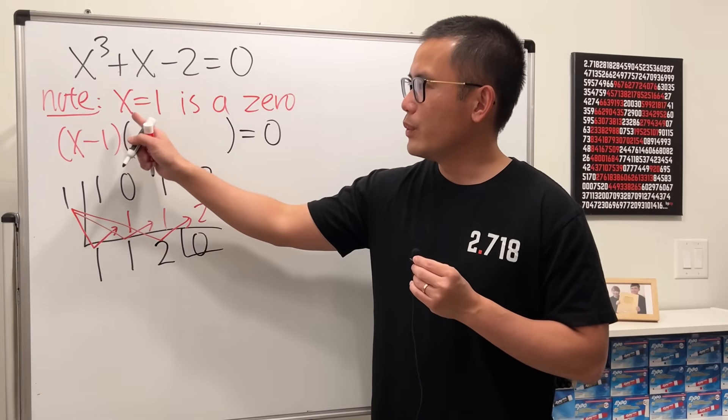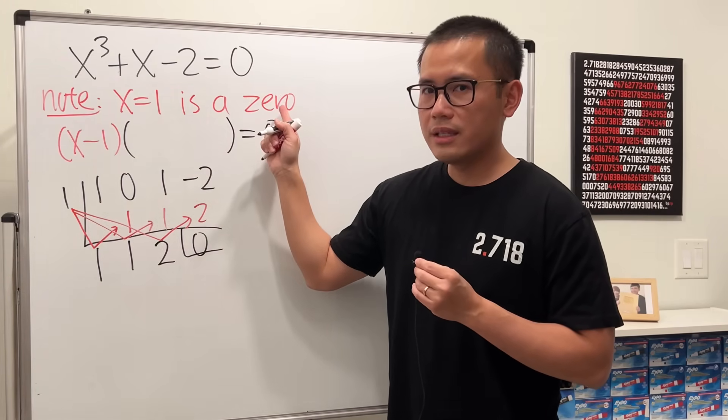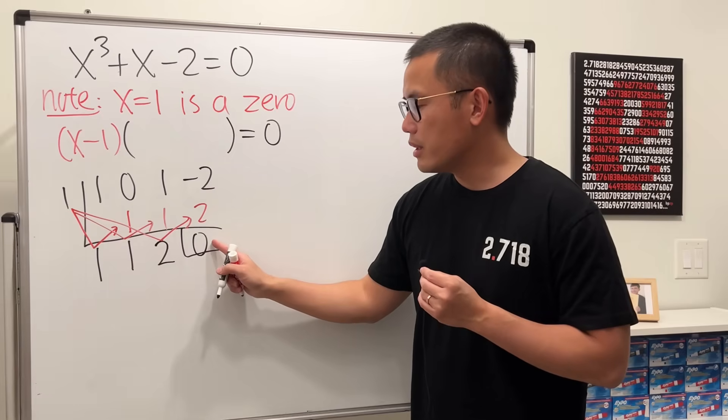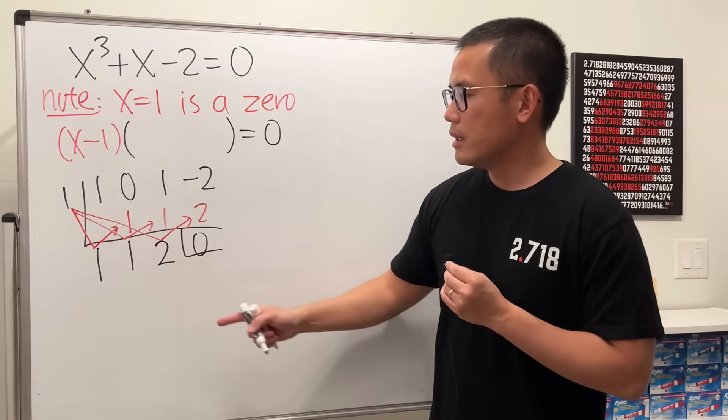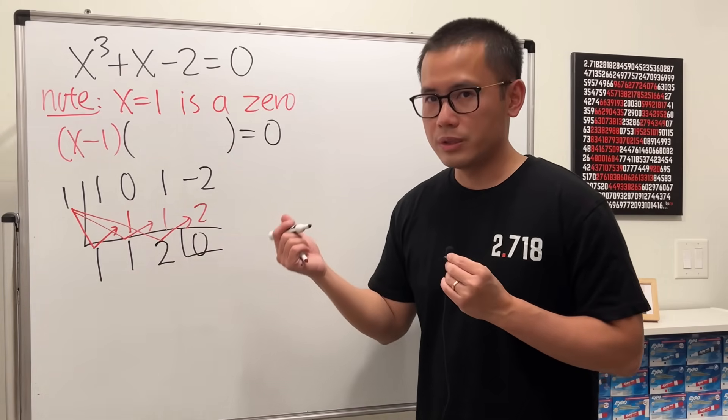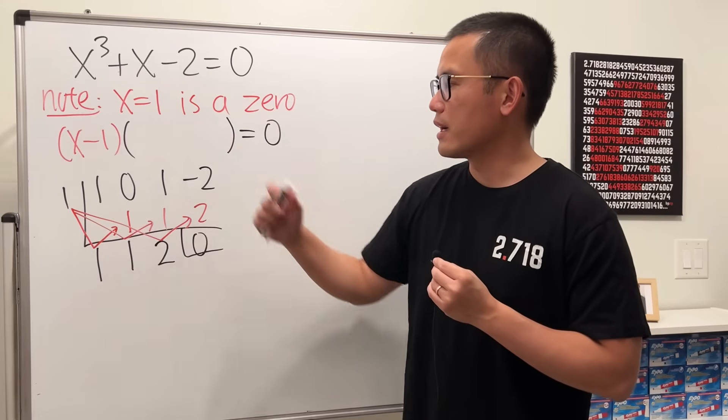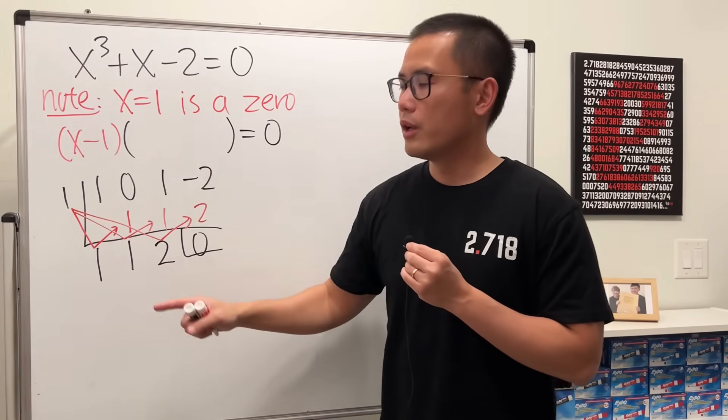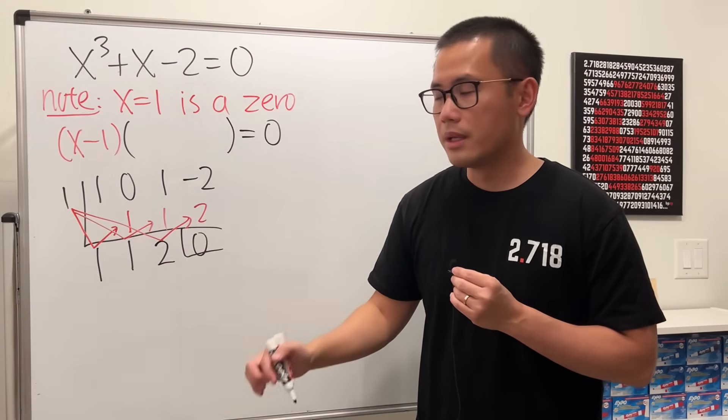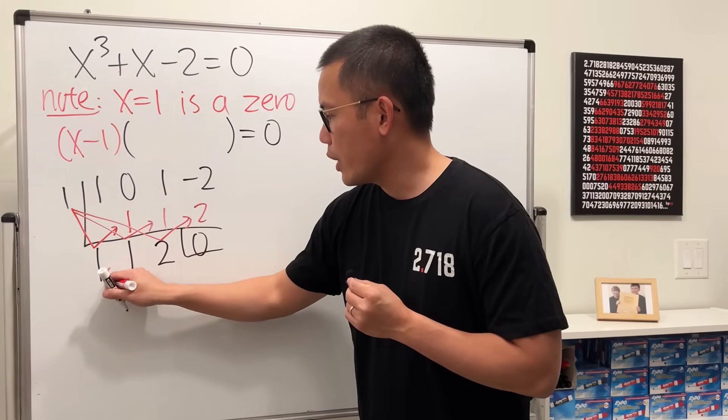Okay, earlier we know that 1 is a zero, right? In that case the remainder here has to be 0, and this is how you are going to read out the coefficient of this factor. Originally, notice was x cubed, right here the power will go down by 1, so we have 1x squared.